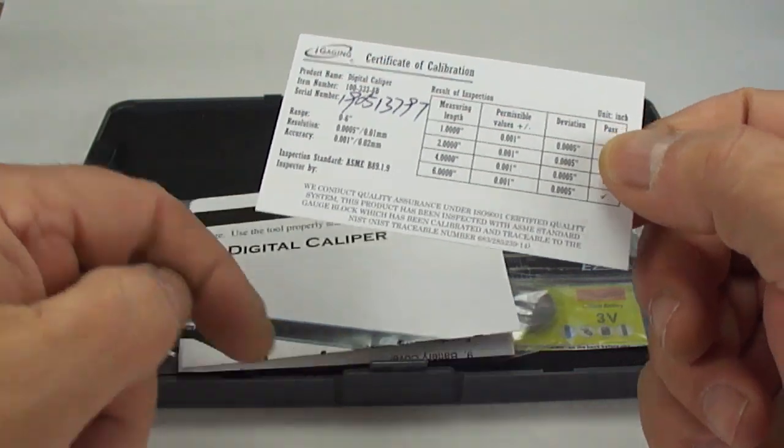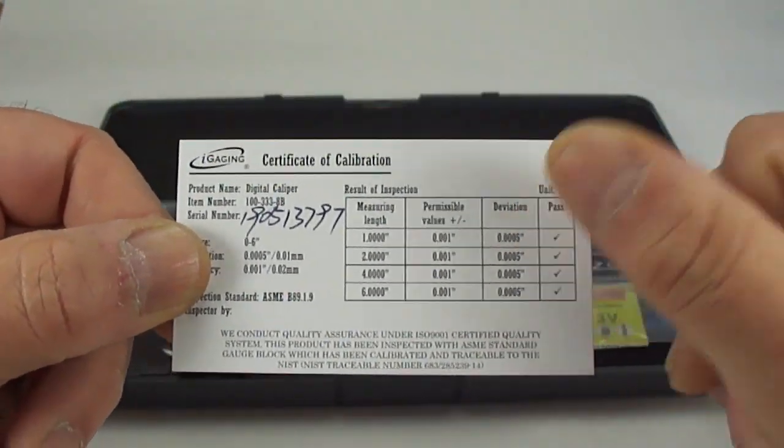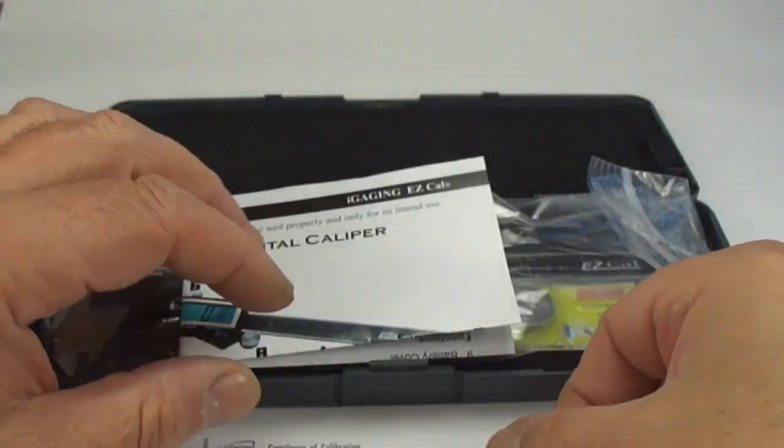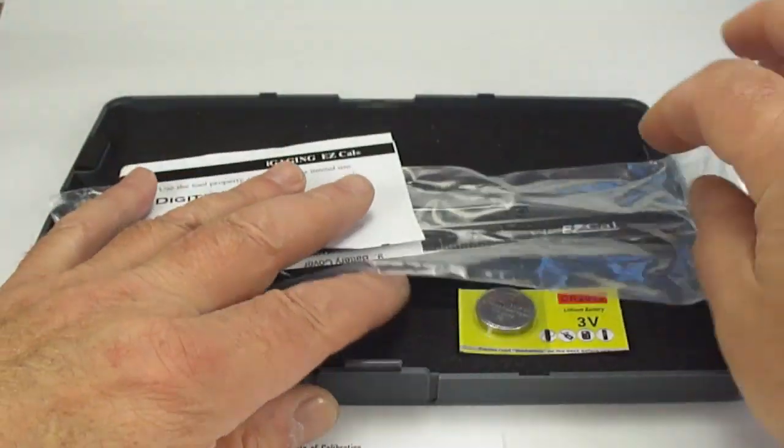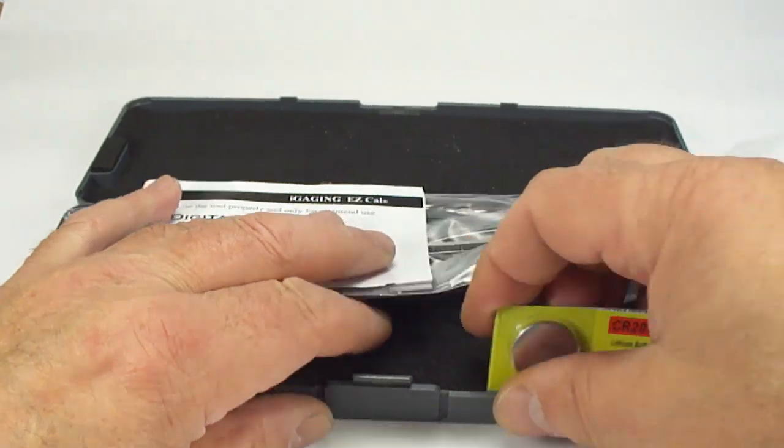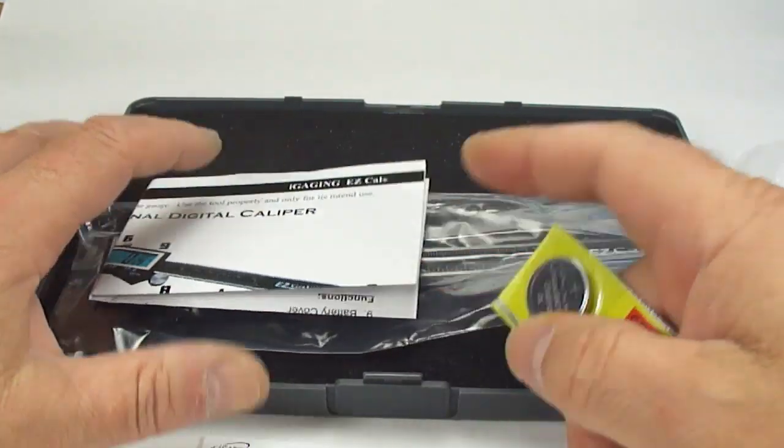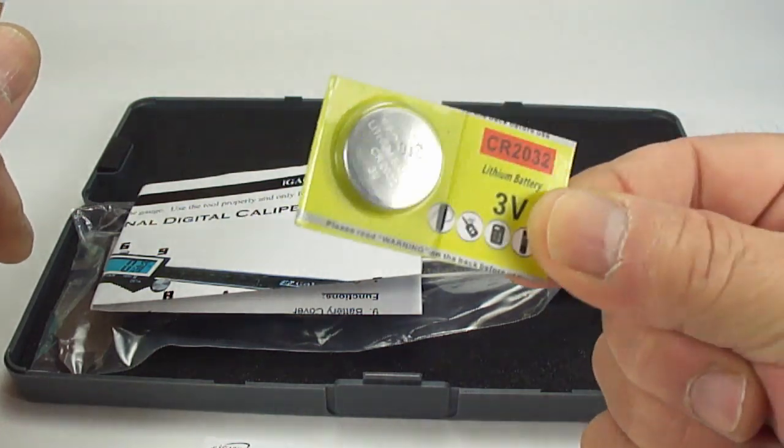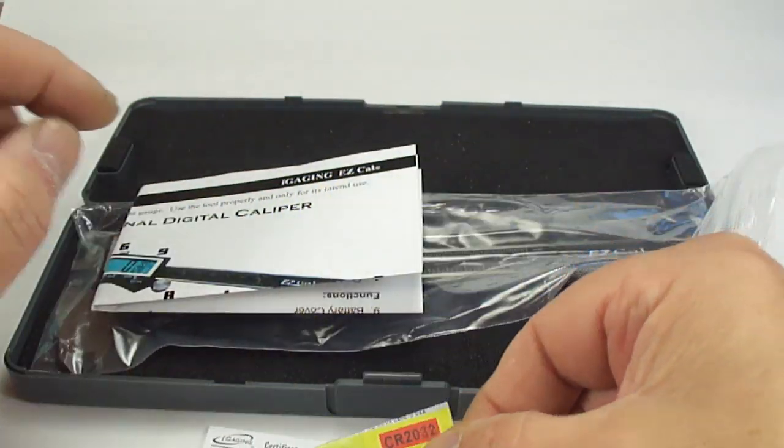For a set under £33 to get a certificate of calibration, I think is absolutely superb. What you also get: a battery installed inside the calipers and a spare battery. Again, superb.